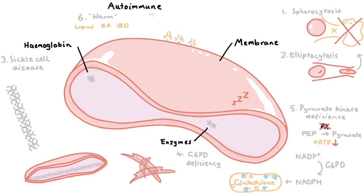Cold hemolytic anemia can be caused by infection — mycoplasma infection, EBV, syphilis, the list goes on — and is precipitated by reduced body temperature.